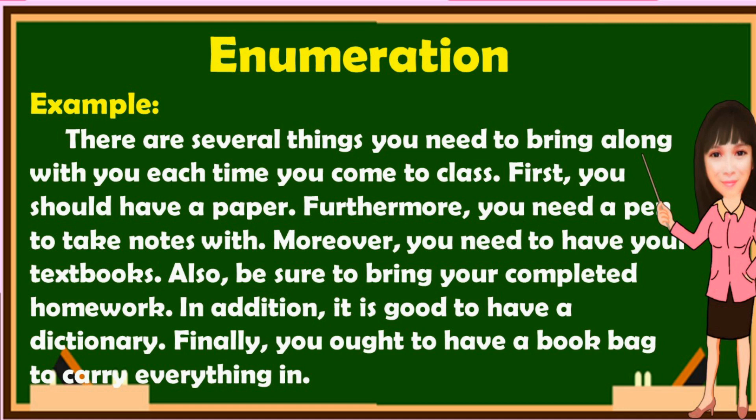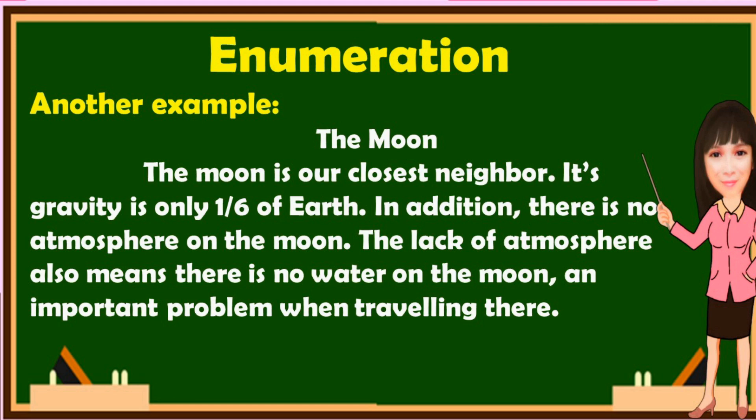Here is an example of enumeration text type: There are several things you need to bring to class. First, you should have paper. Furthermore, you need a pen to take notes with. Moreover, you need to have your textbooks. Also, be sure to bring your completed homework. In addition, it is good to have a dictionary. Finally, you ought to have a book bag to carry everything in. As you can see, the example presents a list of details, tells a process step by step, and mentions a series of words.